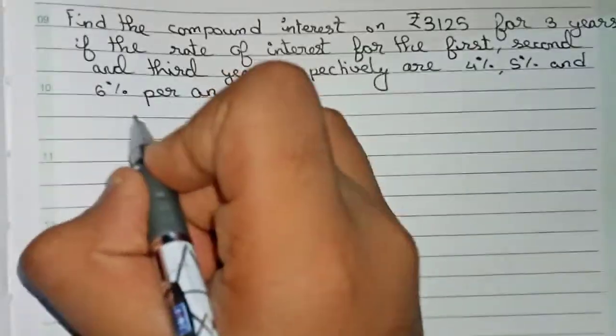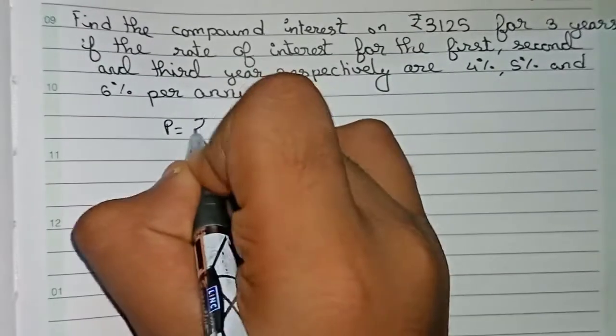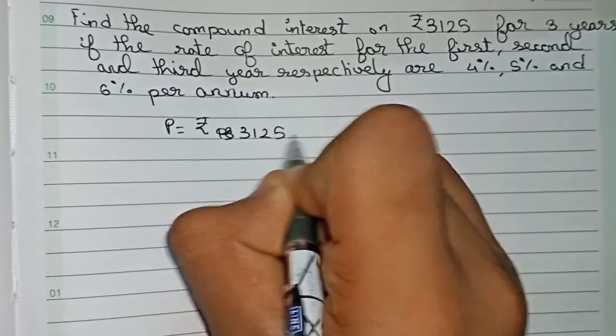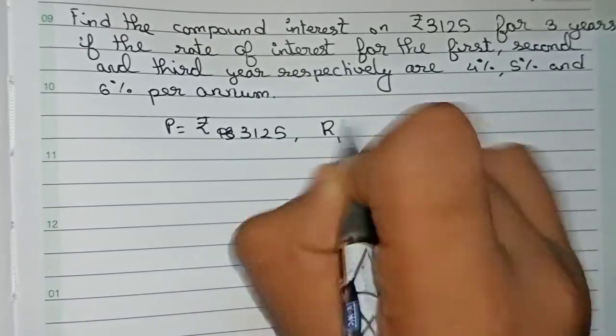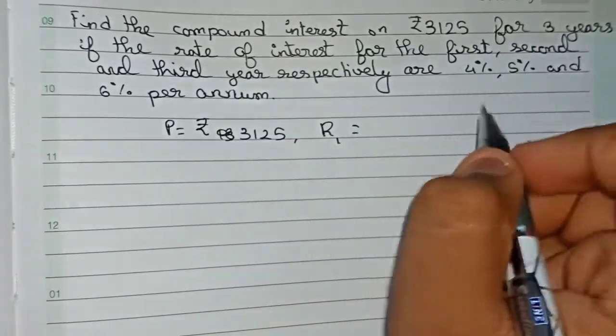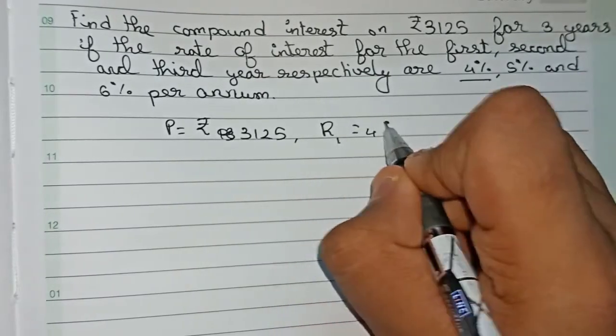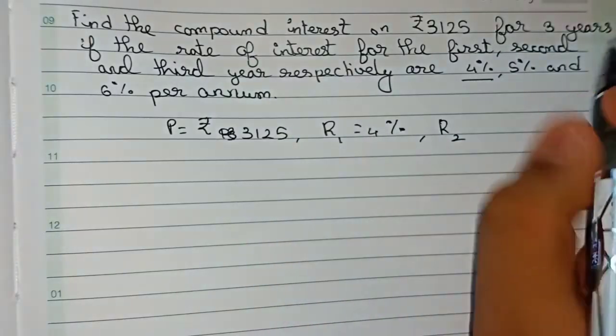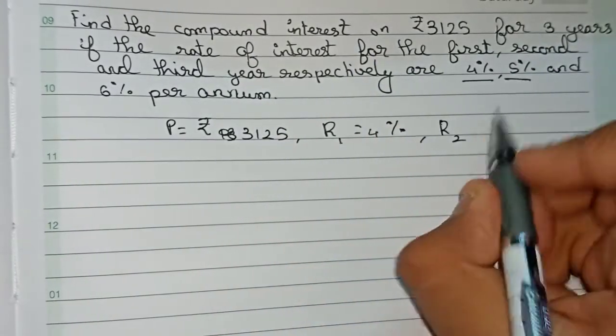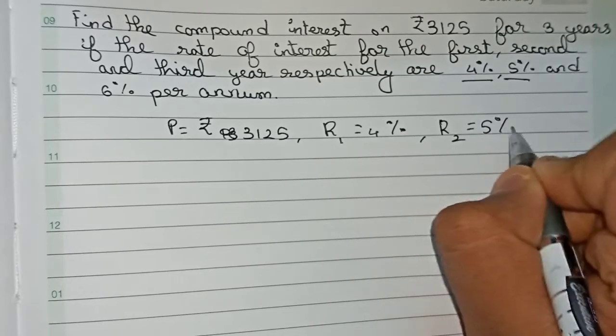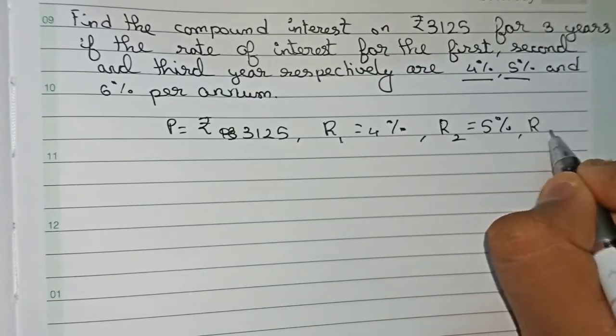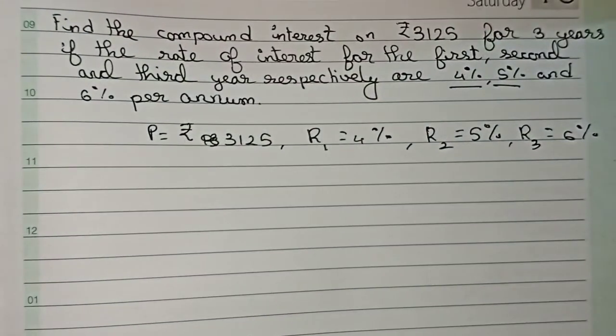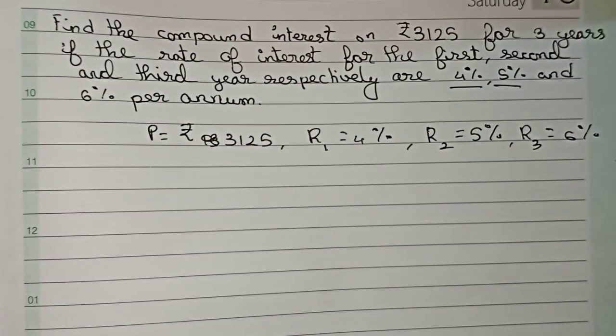For this question, first we write all the information that is being given. The principal is equal to rupees 3125. R1 is the interest for the first year, that is four percent. R2, the rate of interest for the second year, is five percent. And finally, R3 is equal to six percent. We got all the rates of interest.